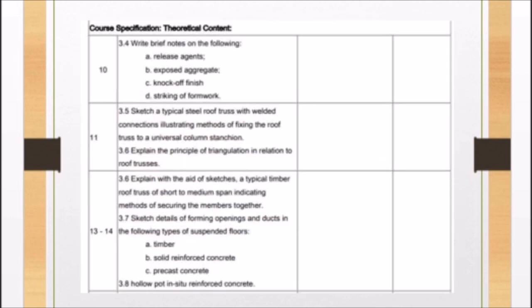The student is also expected to write brief notes on the following: release agents, exposed aggregate, knockoff finish, and striking of formwork. The student is also expected to sketch a typical steel roofing truss with welded connections, illustrating methods of fixing the roof truss to a universal column stanchion.